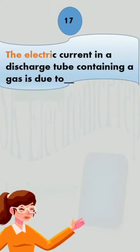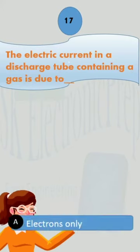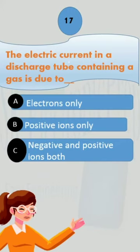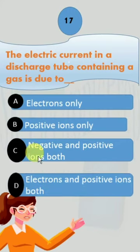The electric current in a discharge tube containing a gas is due to: option A, electrons only; B, positive ions only; C, negative and positive ions both; and D, electrons and positive ions both.